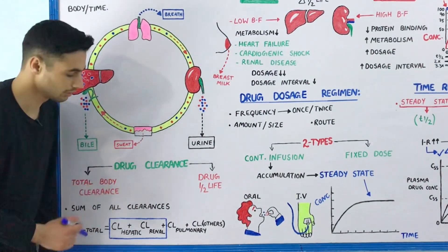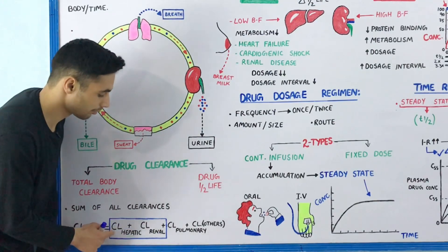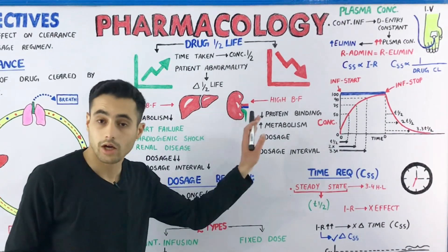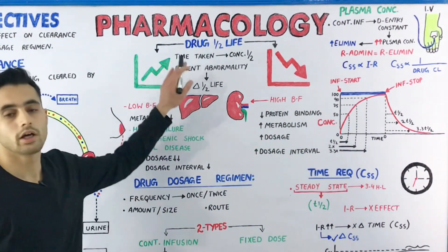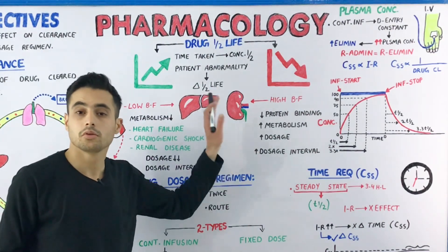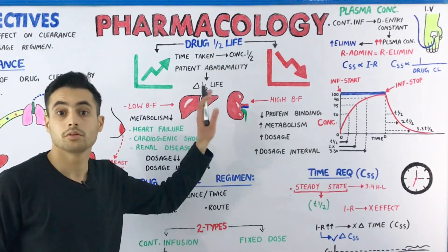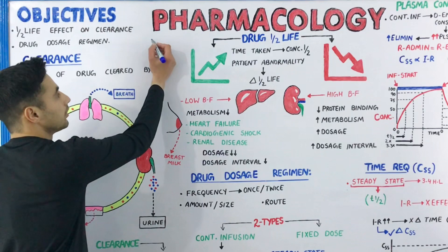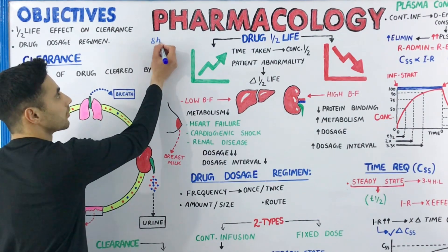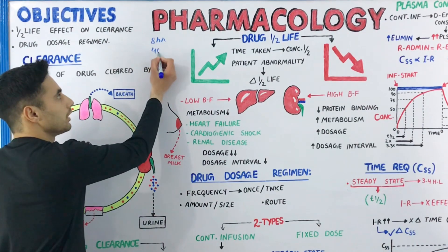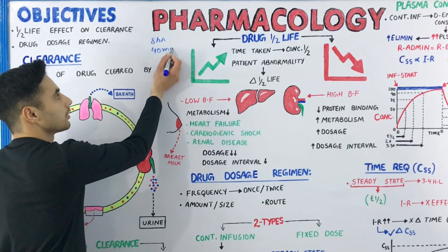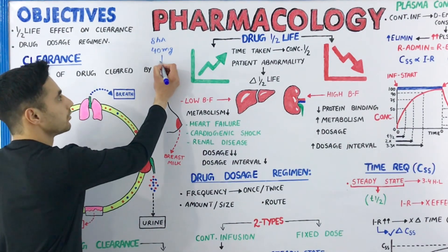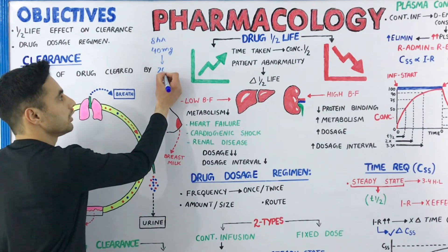The important ones are the hepatic and the renal. Now, what is the half-life of the drug? The half-life of the drug is defined as the time the drug takes to reduce its concentration by half. For example, if we have a drug whose half-life is eight hours and we inject 40 milligrams into the body, after eight hours the concentration reduces to 20 milligrams.